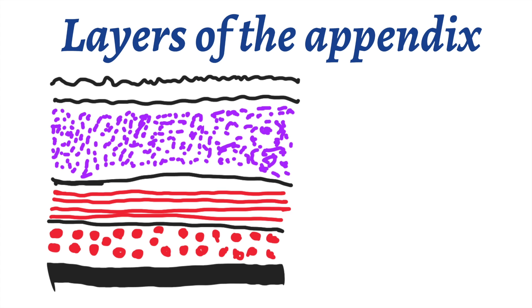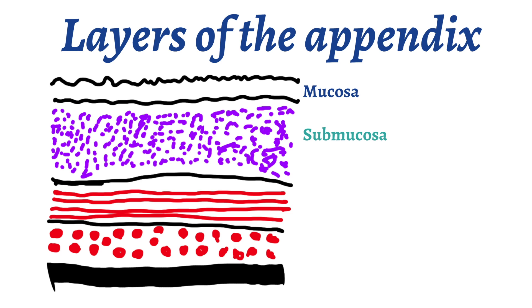The layers of the appendix consist of the innermost mucosal layer. Then deep to that mucosal layer is the submucosa. In the submucosa, there are prominent collections of B and T cells. The large collections of immune or lymphoid cells distinguishes the appendix from other portions of the colon.